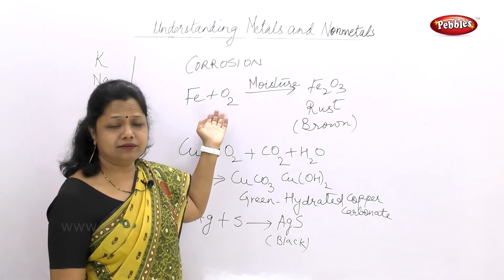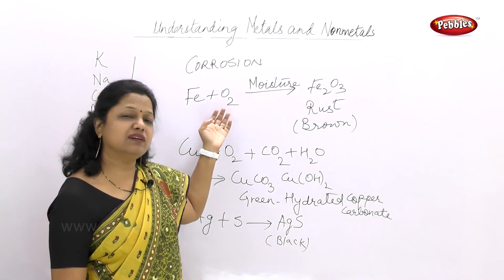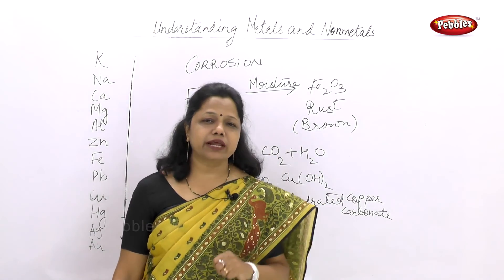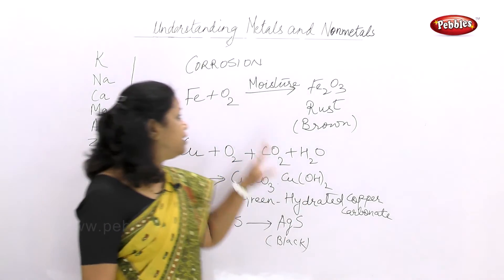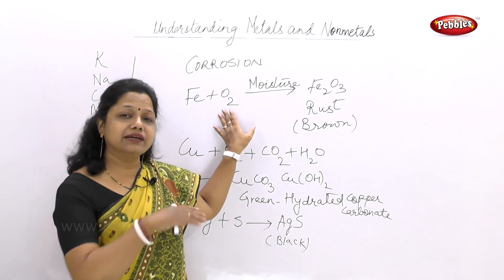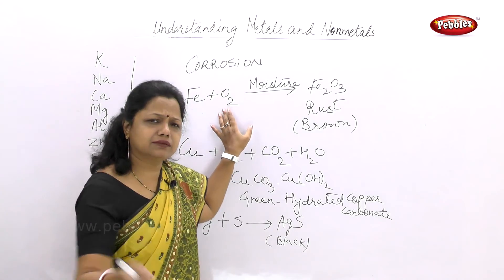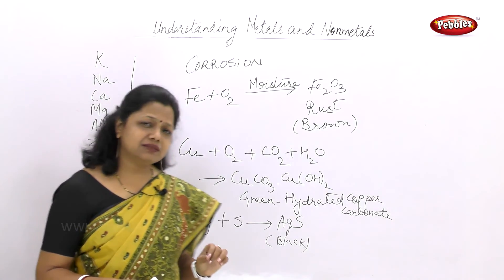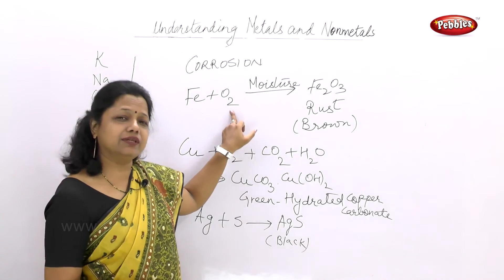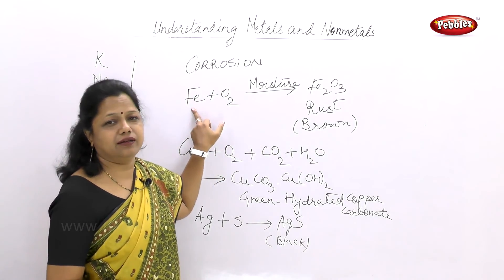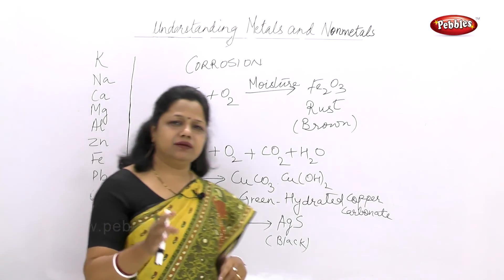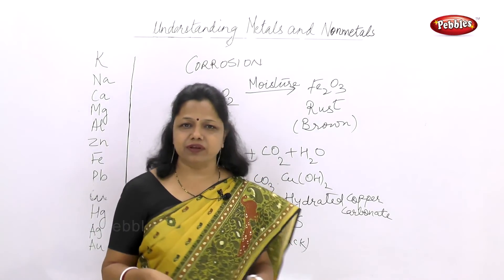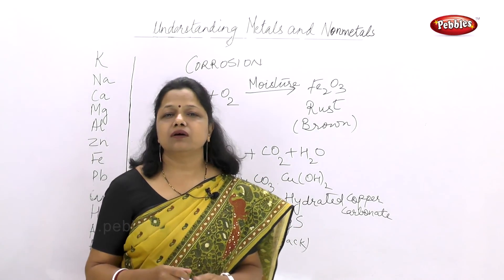What about iron? Can we make it shiny again? It is very difficult to remove rust. So before rust forms, we have to take care - we have to see that iron is painted nicely or greased nicely. If we paint it, the paint does not allow the oxygen present in the air to react with the iron article. In cars and machines, grease is put in between, which is also done to prevent the corrosion of iron.